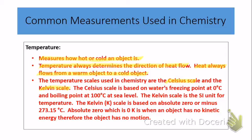The Celsius scale is based on water's freezing point at zero degrees C and the boiling point of water at 100 degrees C, and this takes place at sea level. You must include sea level on your quizzes and tests, because the freezing and boiling points of water can change based on elevation. You must address the freezing point, boiling point, and sea level.